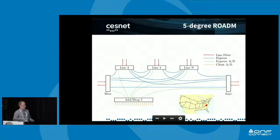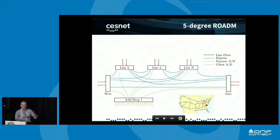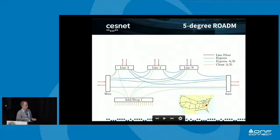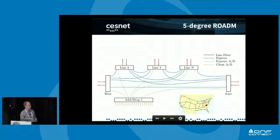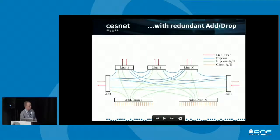If your add-drop group fails — the part of the ROADM where you're inserting or extracting client signals — you essentially lose all local connectivity, which can be mitigated by adding redundancy and using redundant add-drop nodes.